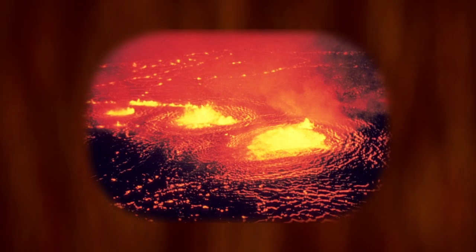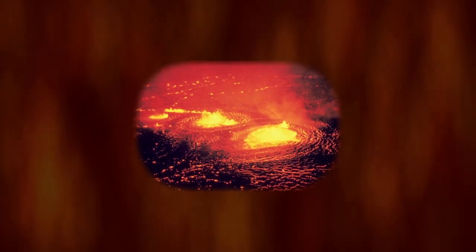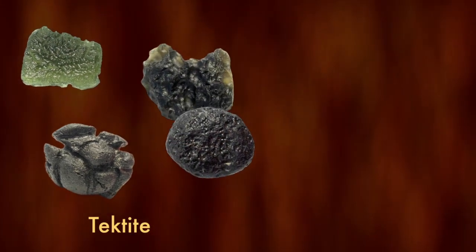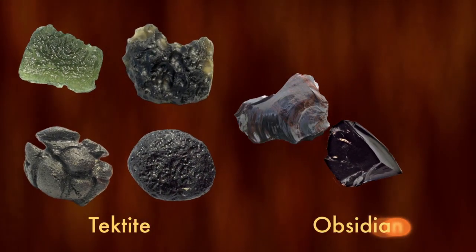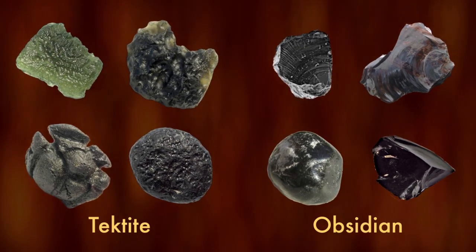What's strange is that tektite and obsidian are formed from molten materials. Tektites are hardened chunks of lava found around meteor impacts on Earth, and obsidian is volcanic glass. Vaporized rocks can form silicon monoxide gas.